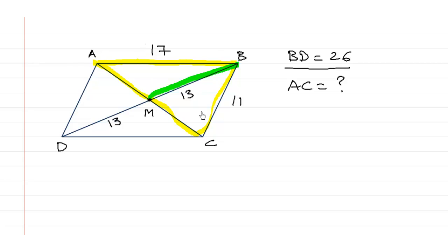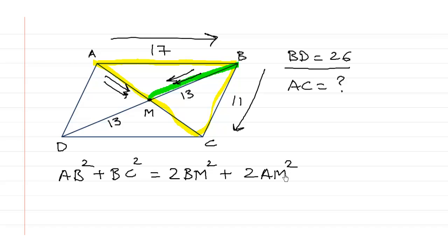So we can apply the Apollonius theorem in this line and the formula would be AB square plus BC square is equal to 2 times the median square. So this is 2 into BM square plus 2 times AM square.